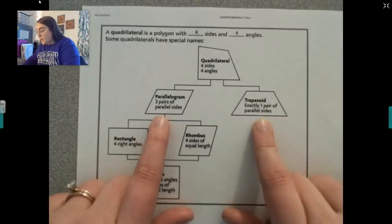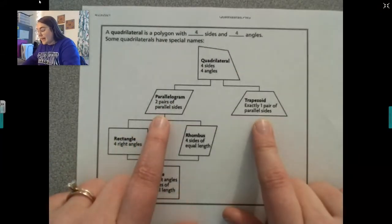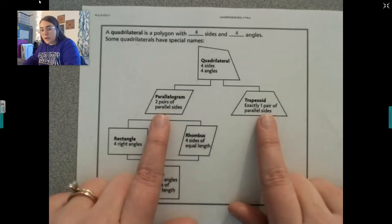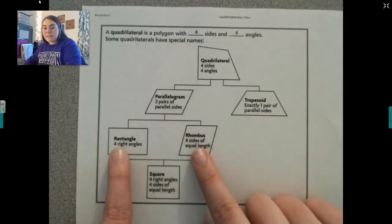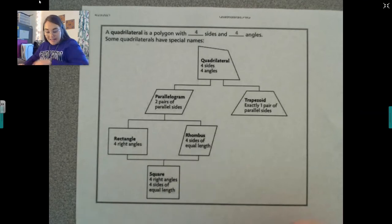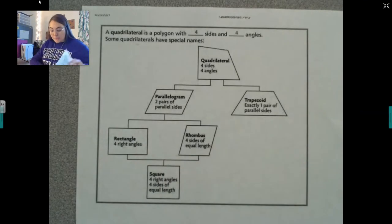Then I think about the parallel lines. Does it have one pair or two? Then I go to my angles and my sides, and that's how I classify those shapes.